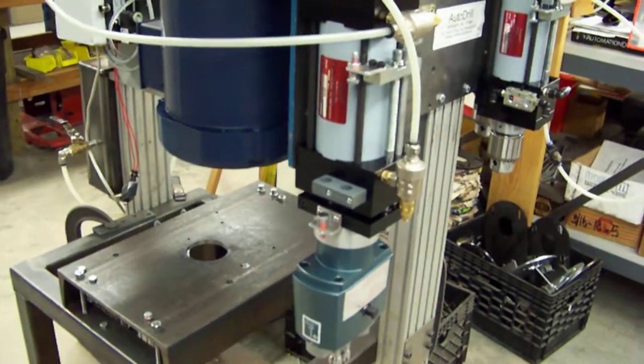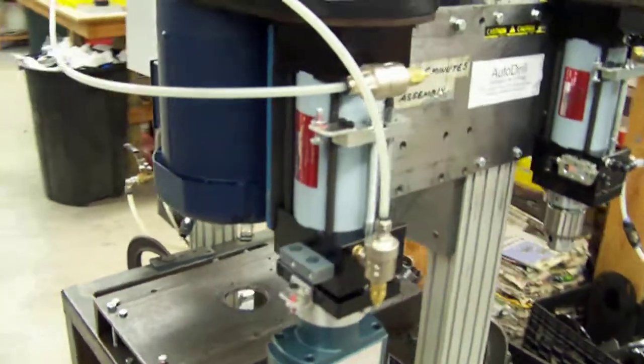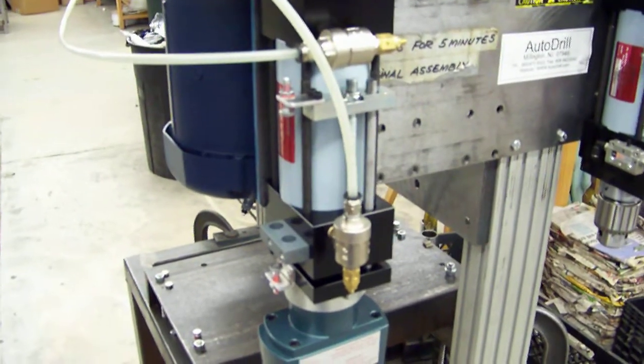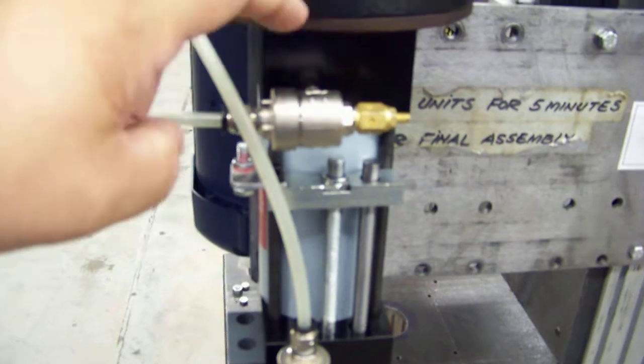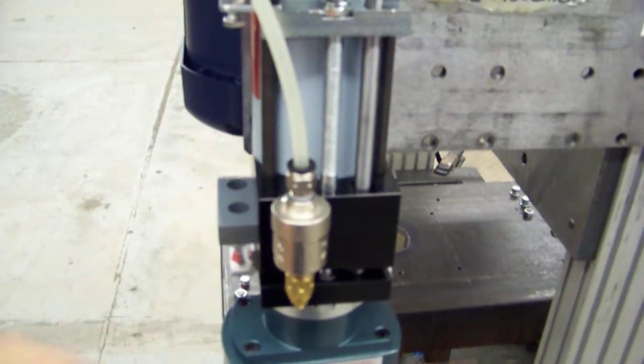This is the Auto Drill Series 2000 unit that we set up for you with a very fast forward and reverse stroke option. As you can see here, we have flow controls on the dump valves, both forward and reverse stroke.